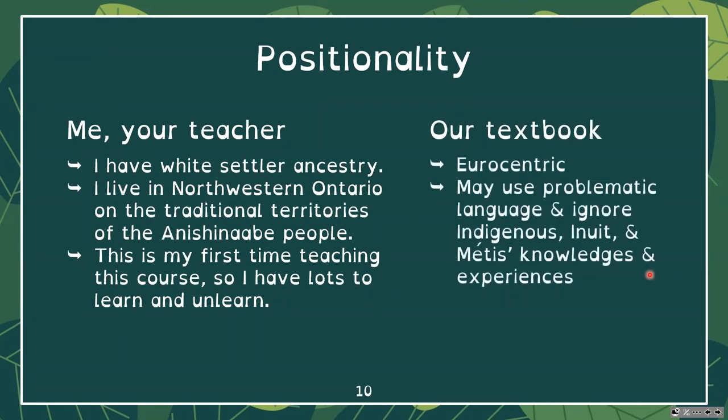Our textbook is Eurocentric — it positions the European ideal and experience as the experience, not just one experience, but as the only experience. This is problematic and there may also be problematic language. I know it ignores Indigenous, Inuit, and Métis knowledges and experiences — I have noticed that already. So I try to integrate as much as I can into our course, though I'm sure I'm missing things sometimes. If you have any suggestions, please let me know and I will learn and do better.